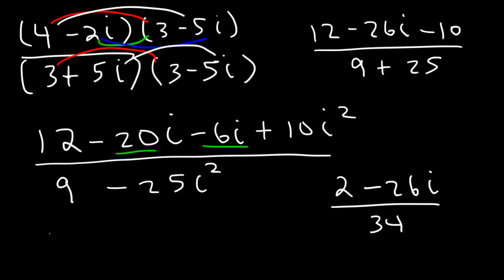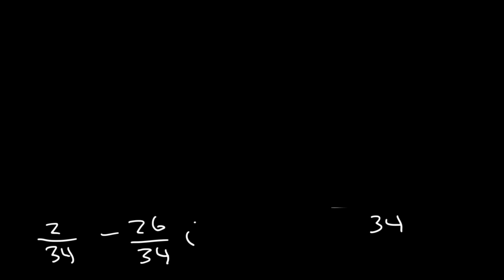So we can separate into two fractions. 2 over 34, and negative 26 over 34 times i. Now let's simplify the fractions. 2 over 34, if you divide both numbers by 2, it reduces to 1 over 17.